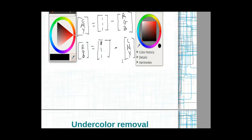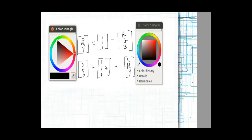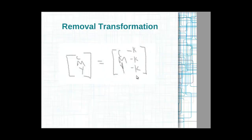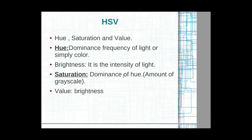If you mix all of C, M, and Y together it should produce black, but in practice it produces a brownish color. So we remove a certain amount, represented by K, which is called under color removal — giving us CMYK. Now, the most important part is hue, saturation, and value. Hue is the dominance of a specific wavelength of light representing a specific color.